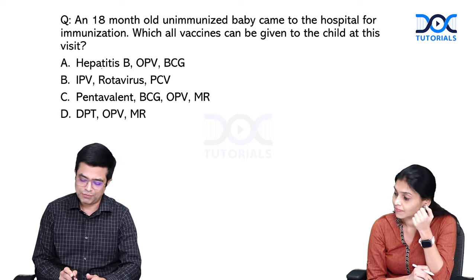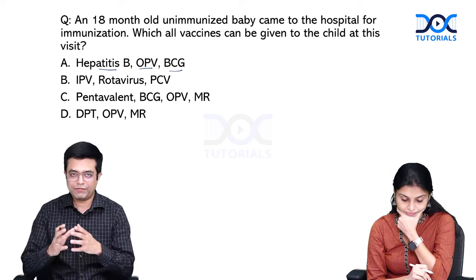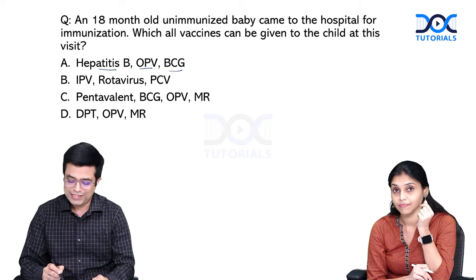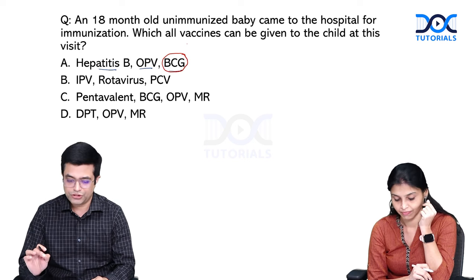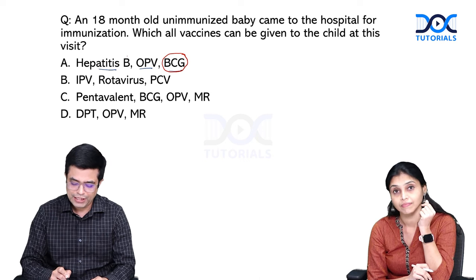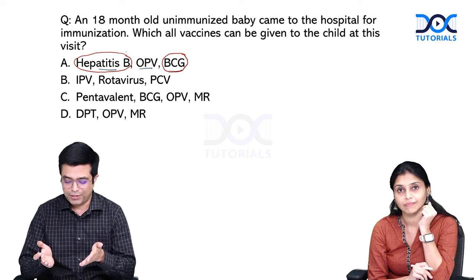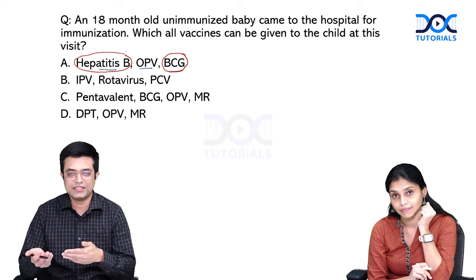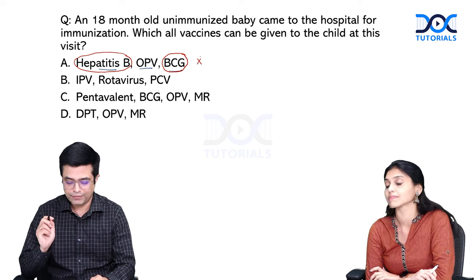Option A says hepatitis B, OPV, and BCG can be given. BCG cannot be given beyond one year of age according to the National Immunization Schedule. And hepatitis B individual dose is only given as a birth dose in the neonatal period. Since it is an 18-month-old child and option A contains hepatitis B and BCG, option A cannot be the answer.